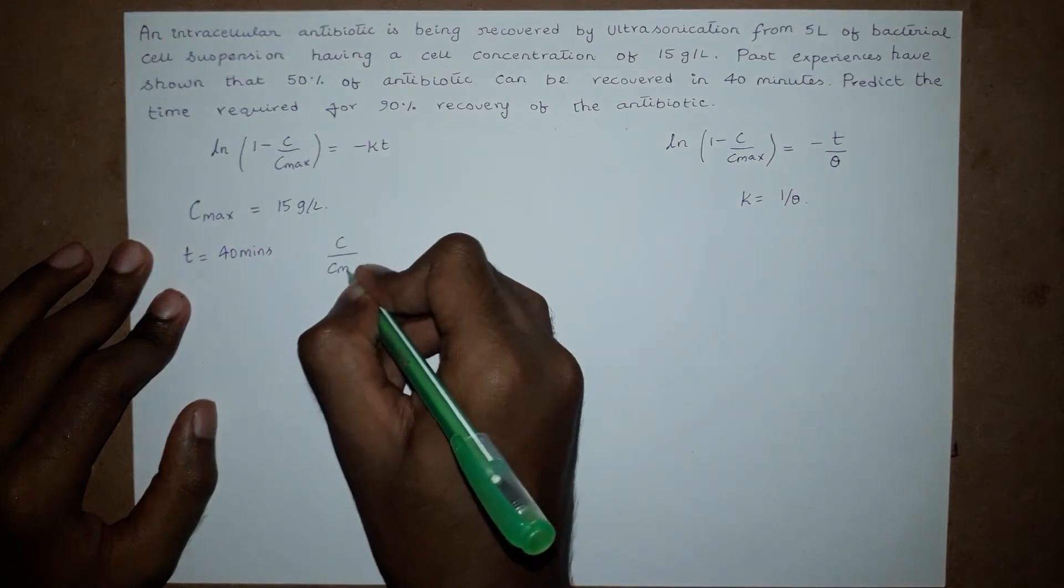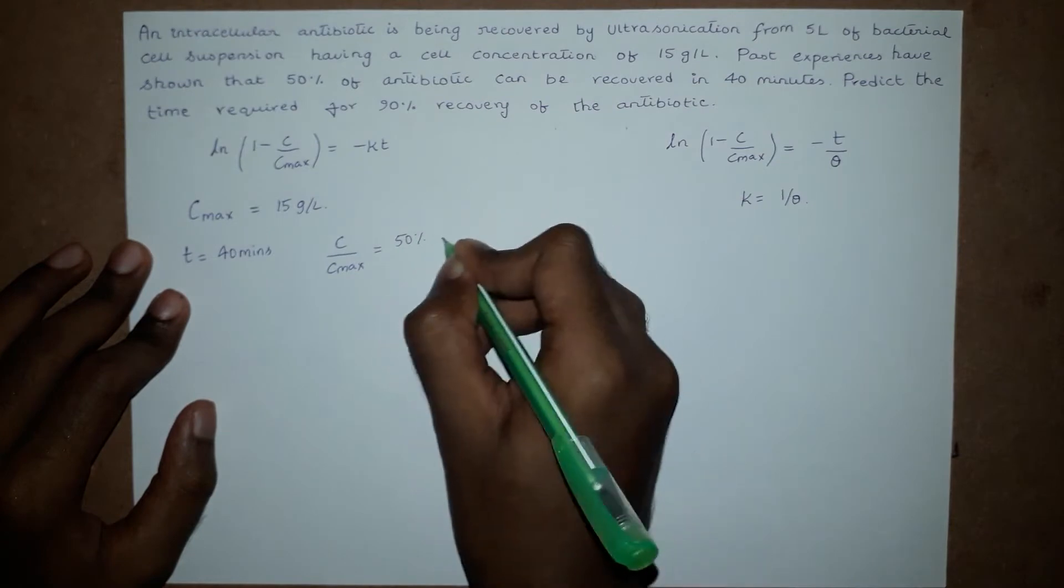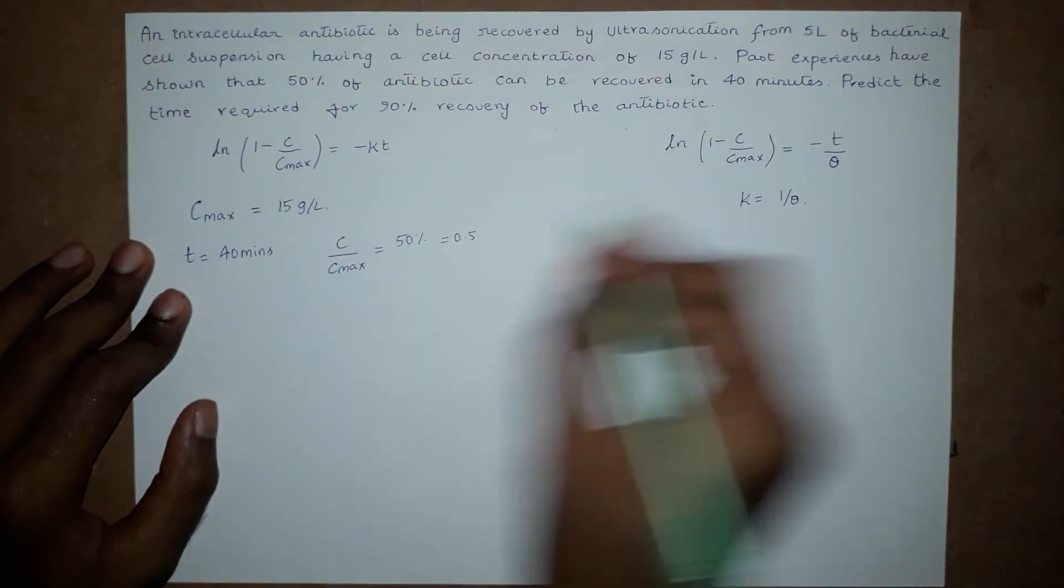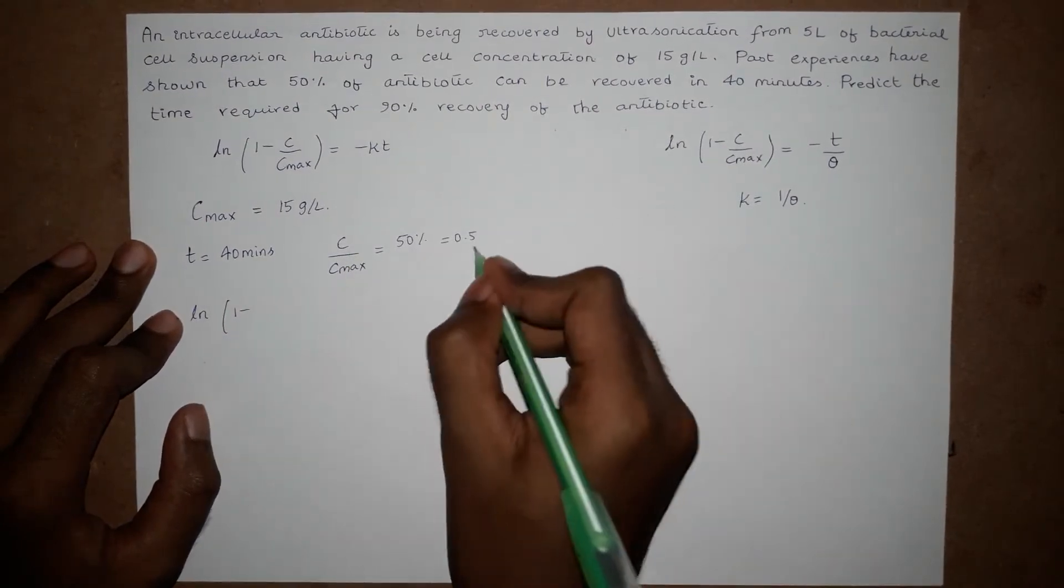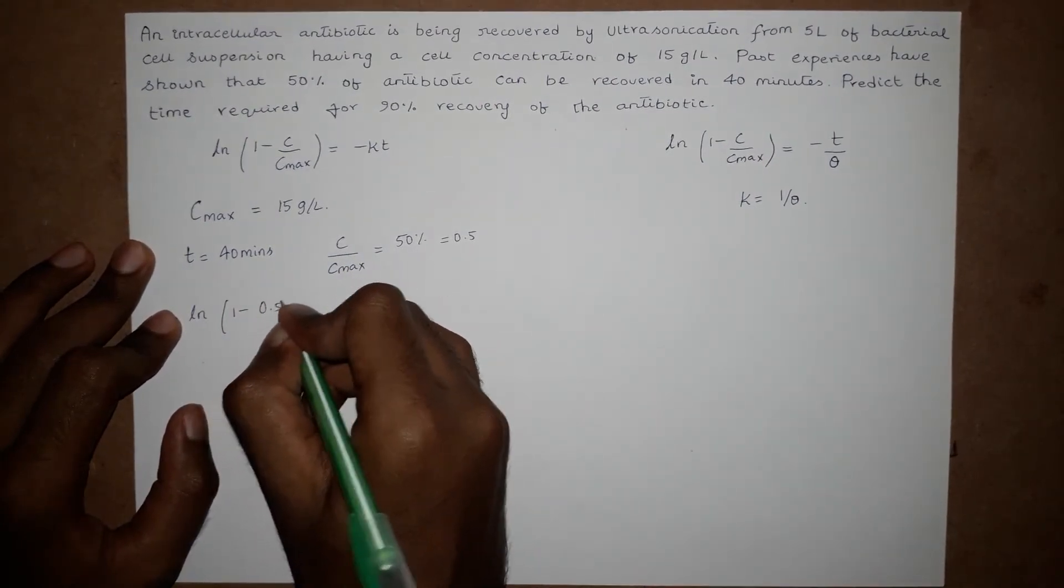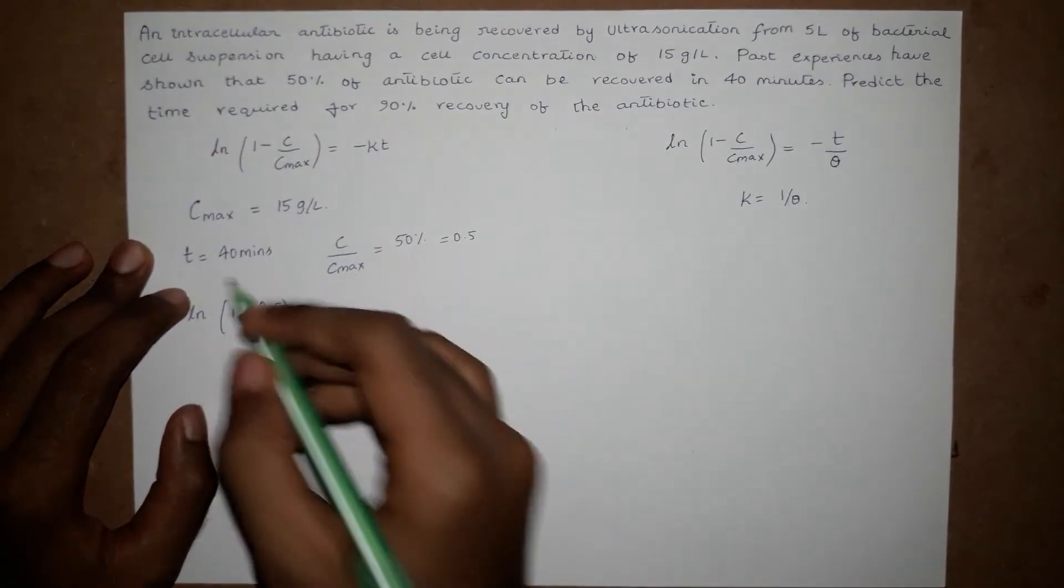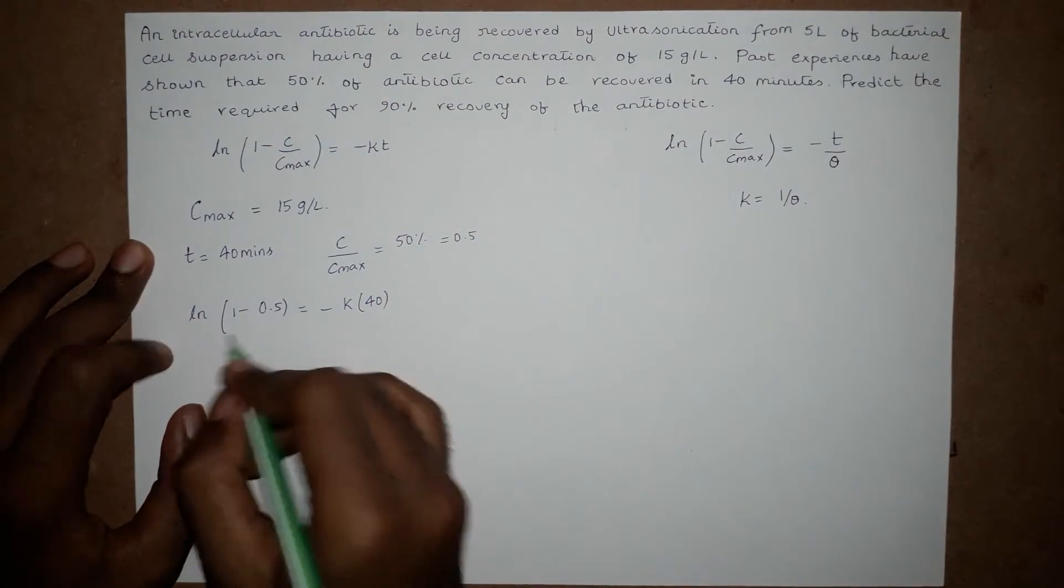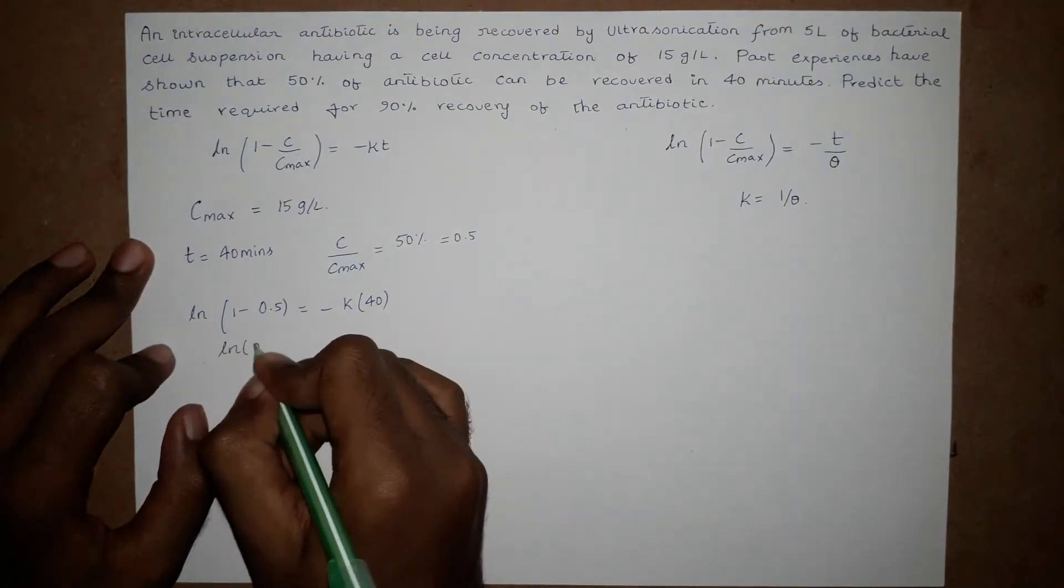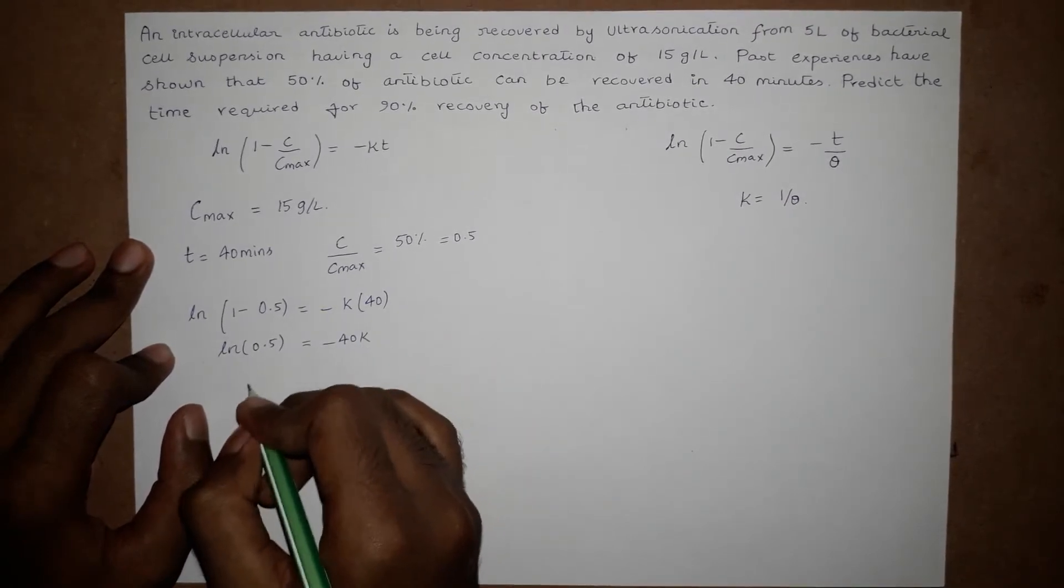Plugging it into the equation: ln of (1 minus C by Cmax) equals 0.5 when time equals 40 minutes, which becomes minus K times T, that is K times 40. So ln of 0.5 equals negative 40K.